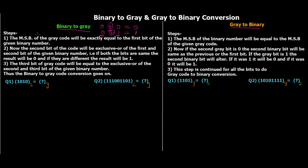For binary to gray code conversion, the steps are: first, the MSB of the gray code will be exactly equal to the first bit of the given binary number. Second, the next bit of gray code will be the XOR of the first and second bits of the binary number — if both bits are the same the result is 0, if they are different the result is 1. Third, each subsequent gray code bit is the XOR of the corresponding consecutive binary bits, and this continues for all bits.